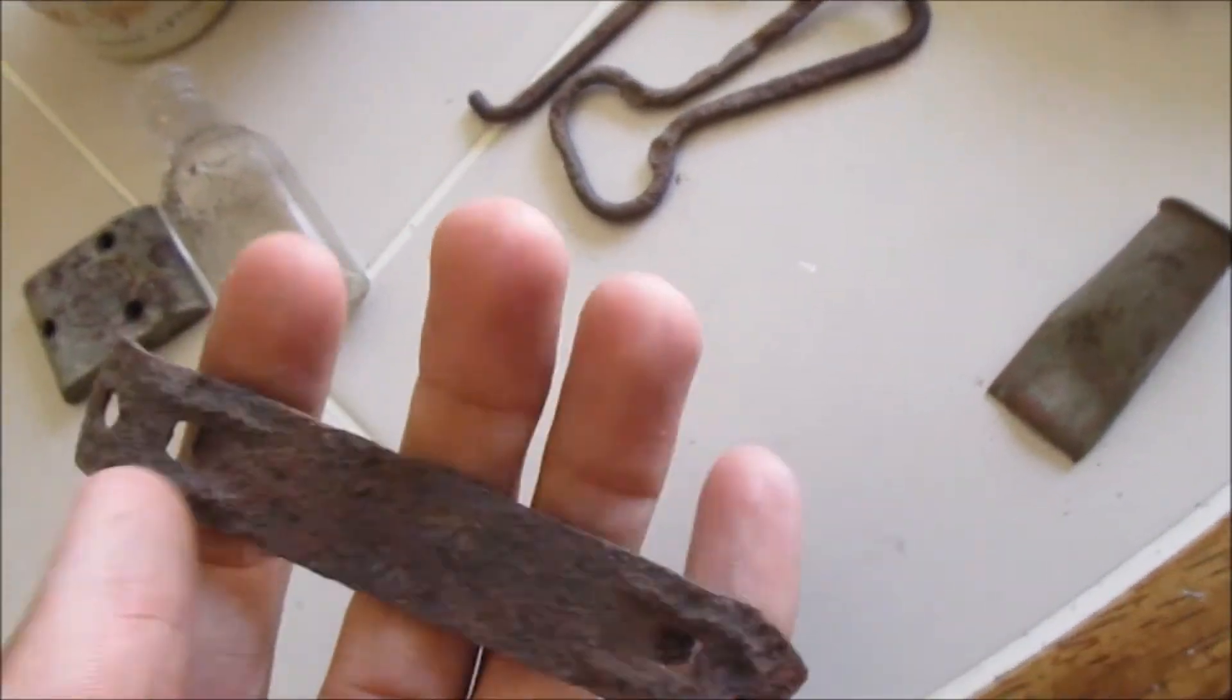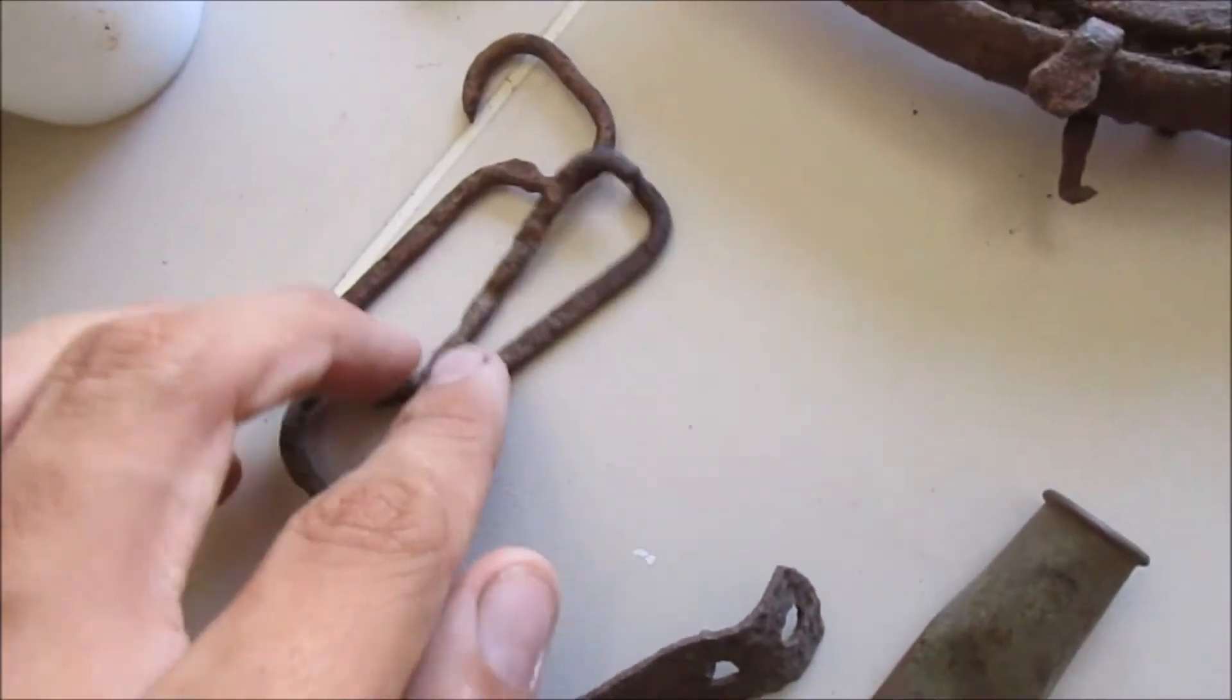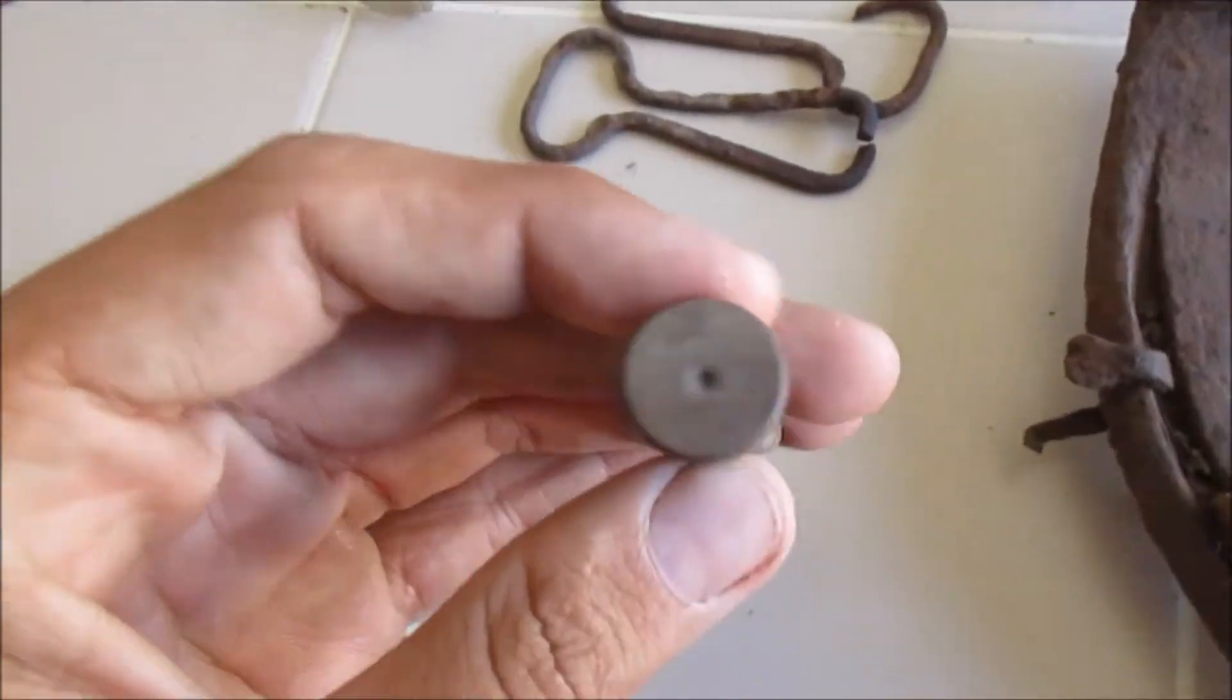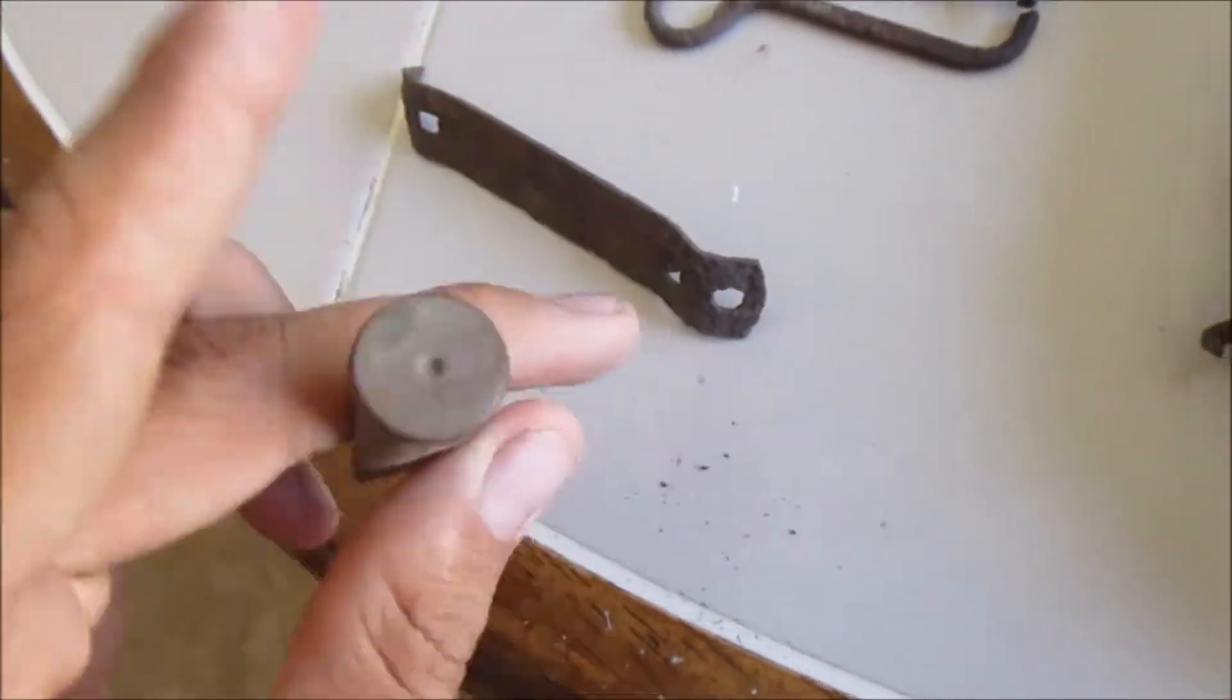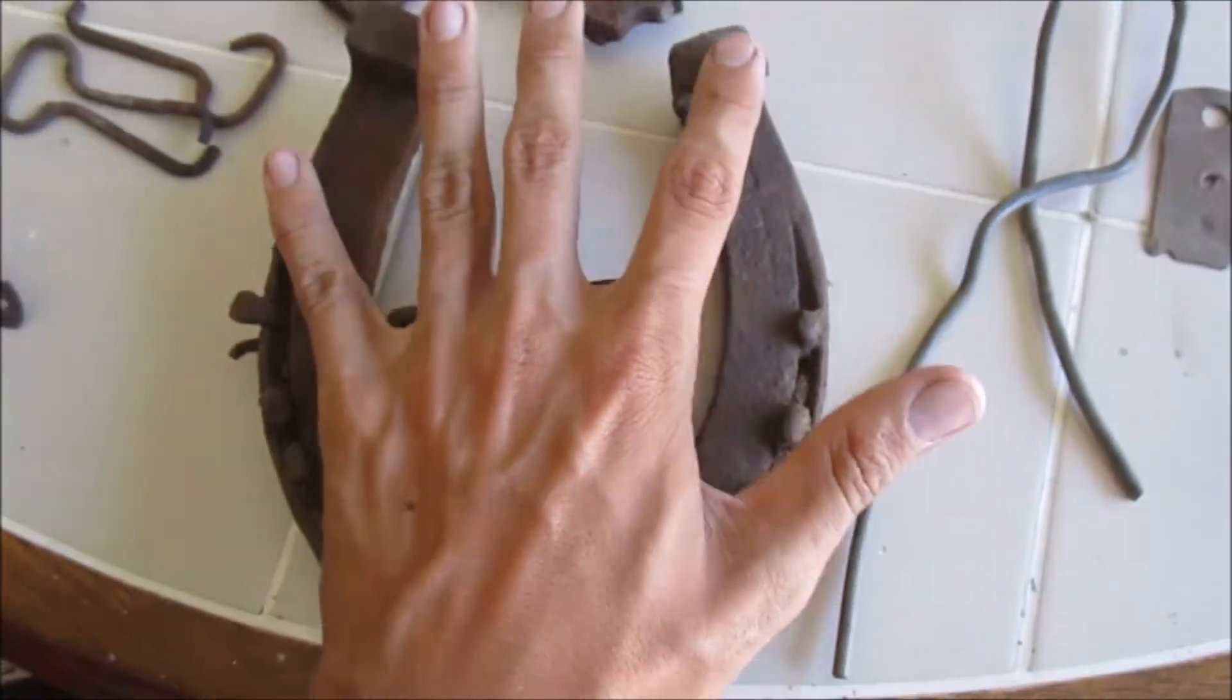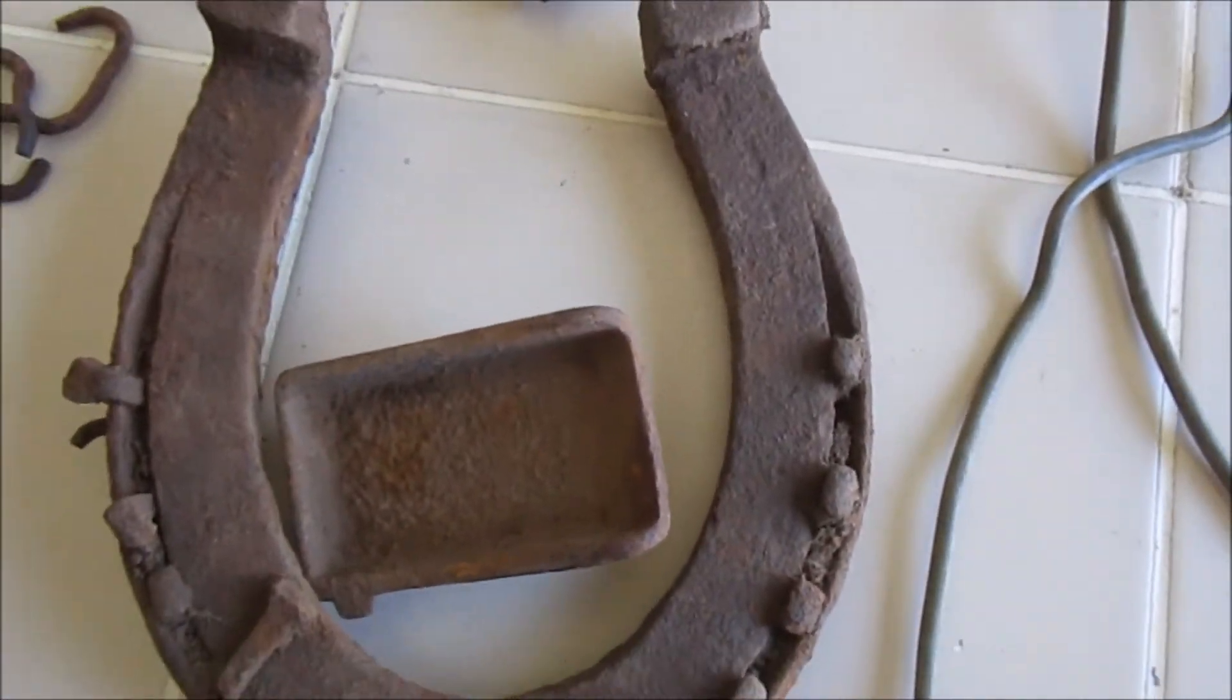I thought I had another one of these can openers but I don't know where it is. A couple bottle openers. 45-70 shell. Big horseshoe. I have a pretty big hand, that's pretty big. Must be for Clydesdale or something.